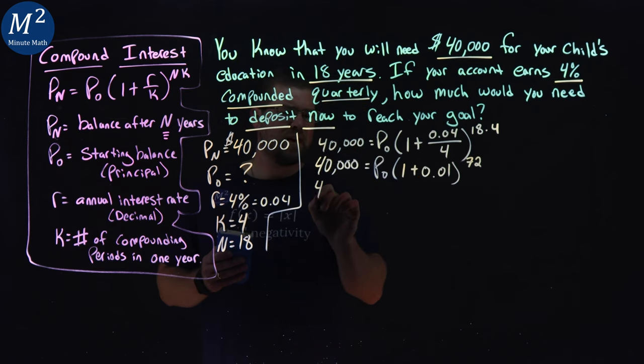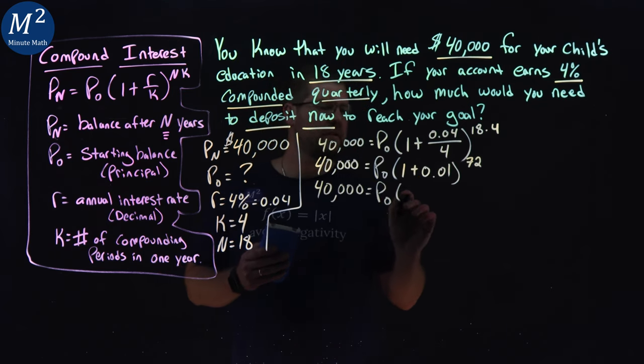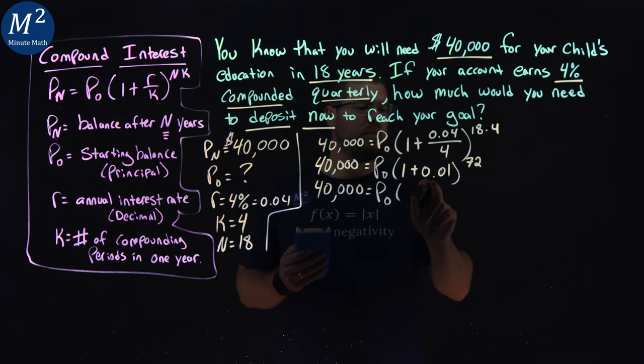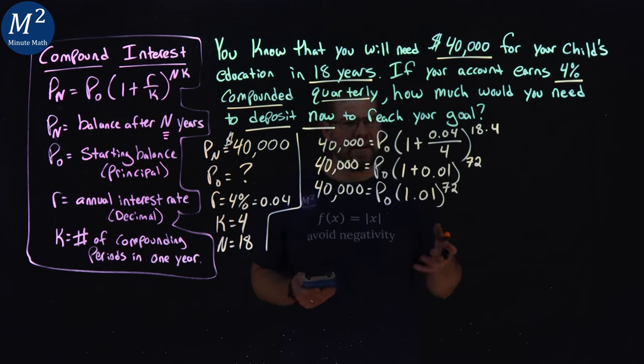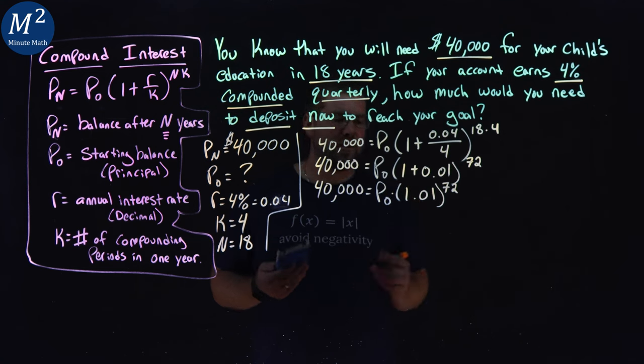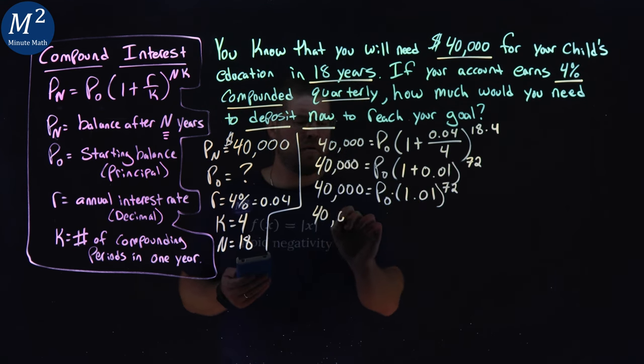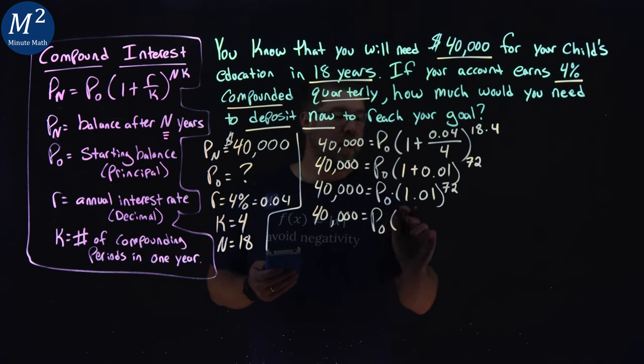Again, I'm going to resimplify this because I have some time here, and it's going to take your time and show you the steps. 1 plus 0.01 is 1.01 right there to the 72 power. Now, at this point, I would either divide both sides by this whole amount here or simplify it. I'm going to actually just simplify it. Why not? 40,000, P sub 0 times exponents come first, order of operations.